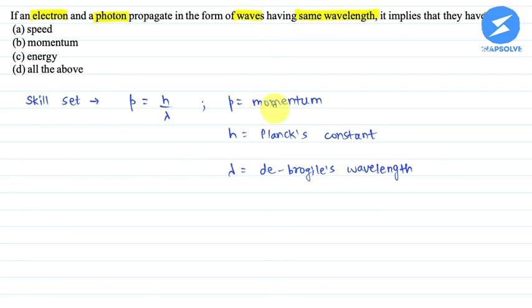For this question, the skill set required is that the de Broglie's wavelength is related to this equation, where P equals h upon lambda. P is momentum, h is Planck's constant, and lambda is wavelength.